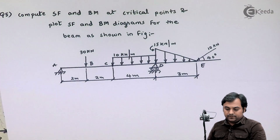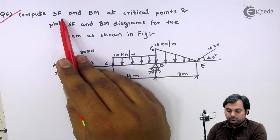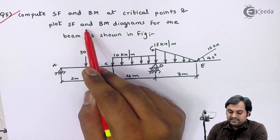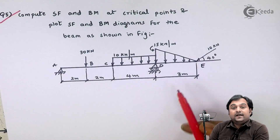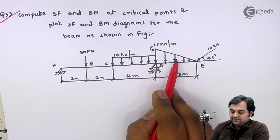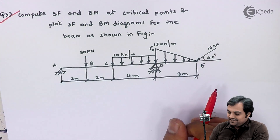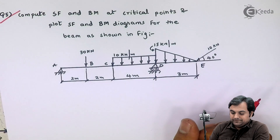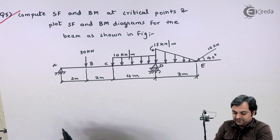Let us take the next question. The problem is: compute shear force and bending moment at critical points and plot SFD and BMD diagrams for the beam as shown in the figure. In this diagram we have a point load, UDL, as well as UVL and an inclined load. This problem deals with all the cases and here we have to draw the SFD and BMD for such a beam.